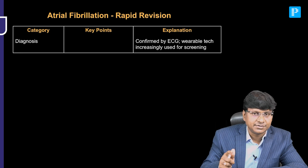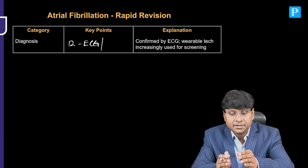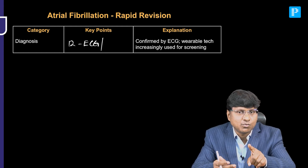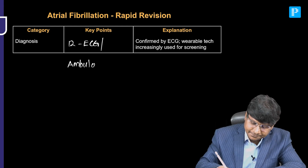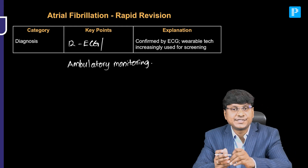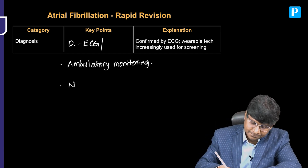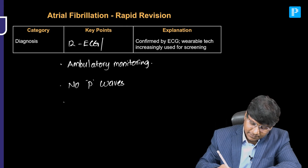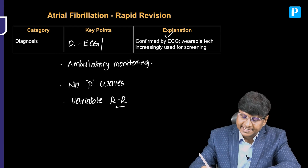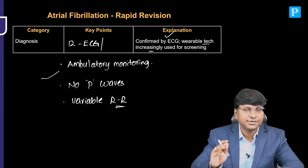The diagnosis of atrial fibrillation is mainly done by a 12-lead ECG. In cases of paroxysmal AF where AF terminates within 7 days, ambulatory monitoring is required, showing irregularly irregular rhythm without P waves and variable RR interval. This is confirmed by ECG or ambulatory monitoring technology, which is increasingly used for screening.